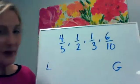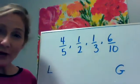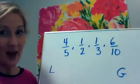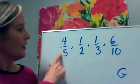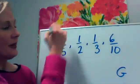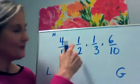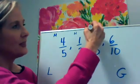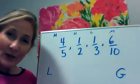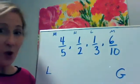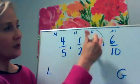Sometimes when I have a list like this, I'll start by comparing these fractions to the benchmark fraction one half — that gives me some good data. Four fifths is more than a half, and I like to record that with a little 'm' for more. One half is obviously a half. One third is less than a half, and six tenths is more than a half. So with that one step, I've already learned a whole lot of information.